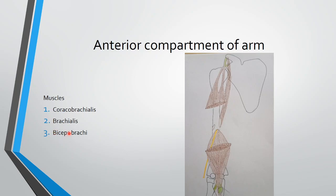The bicep brachii muscle, as the name suggests, has two heads — a short head and a long head. The short head, along with coracobrachialis, takes origin from the coracoid process. The long head takes origin from the supraglenoid tubercle intracapsularly — it is tendinous and comes outside the joint and fuses with the short head. Both heads fuse and make a bulky covering in front of the arm. This bulky bicep brachii muscle is again converted into a tendon which is inserted onto the radial tuberosity on the posterior rough part of the bone.